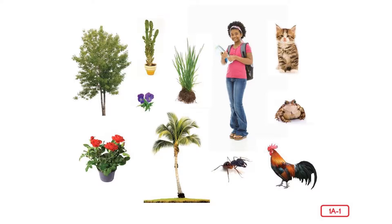They are all alive. They need food, water, and air to grow and stay alive. But plants, people, and animals are different in many other ways. How do you think plants and animals are different? Unlike animals and people, plants do not make sounds and they cannot move from one place to another.